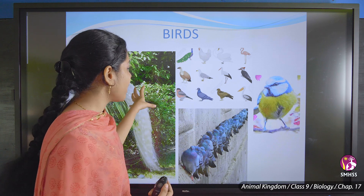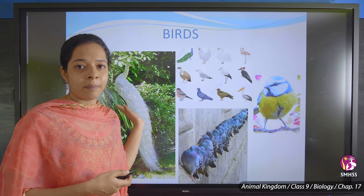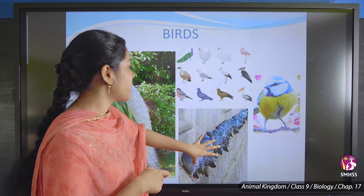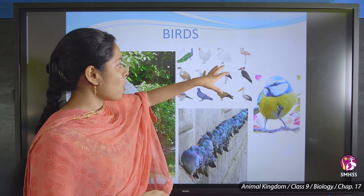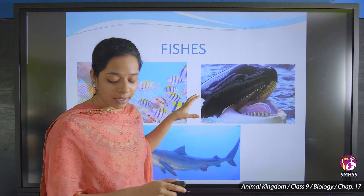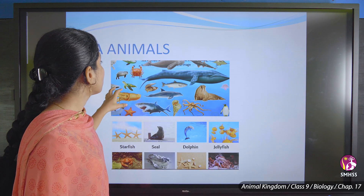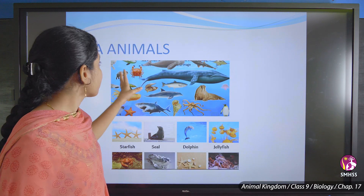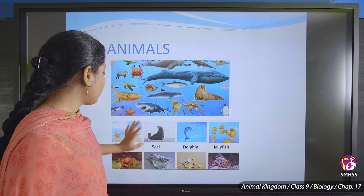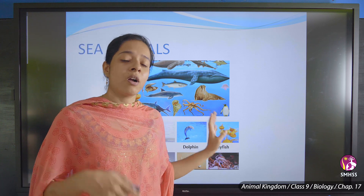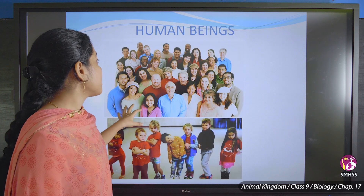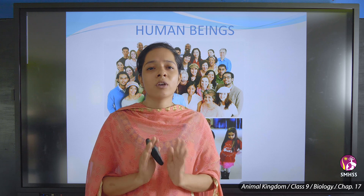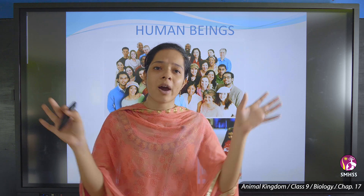Birds we are familiar with include the peacock — which is our national bird — and the pigeon. The national animal is the tiger. Fishes include whales, sharks, golden fishes, crabs, dolphins, jellyfish — all sea animals. And finally, human beings are also a species.